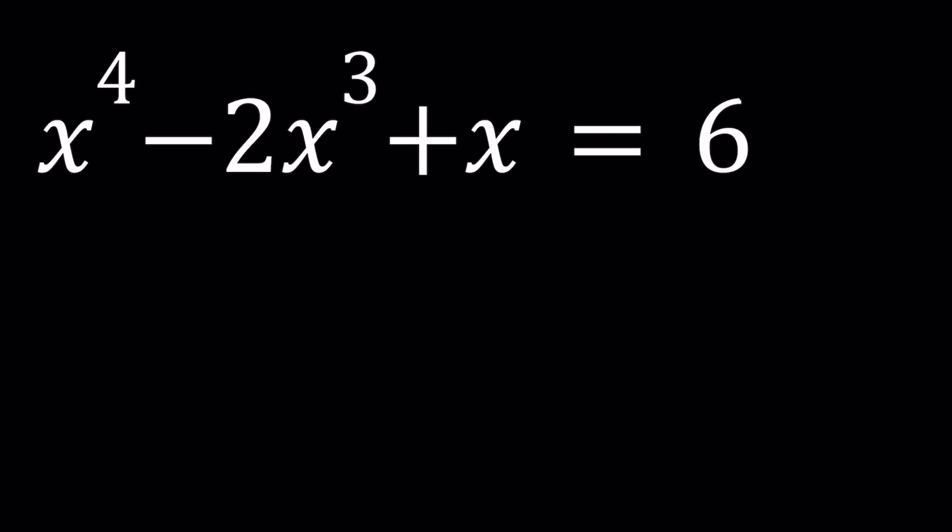Hello everyone. In this video we're going to be solving a nice Olympiad problem from Russia. We have x to the 4th power minus 2x cubed plus x equals 6, and we're going to be solving for x values.